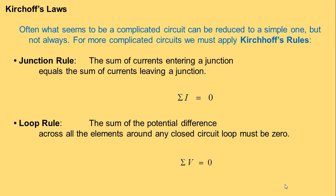First, we are going to discuss the junction rule. The junction rule states that the sum of currents entering a junction equals the sum of currents leaving the junction — that is, the sum of all currents must be equal to zero. Remember that the junction rule is associated with conservation of charge, or we can say it is manifested from the law of conservation of charge.